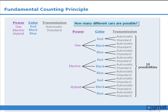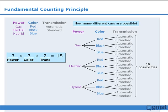Here comes the most important part. Notice that when we were constructing our tree diagram, we had three options for the power source, three options for the color, and two options for the transmission. Notice that when we find the product of these three values, we get 18, the same number we calculated for the total number of different cars we can build. This is no coincidence. In fact, this result complies directly with the fundamental counting principle.